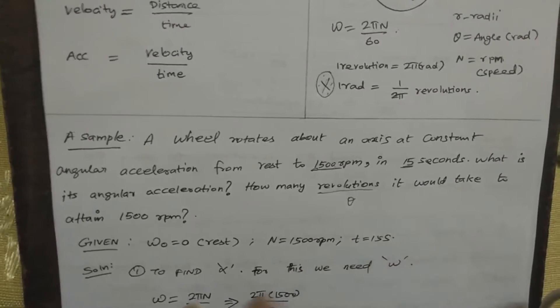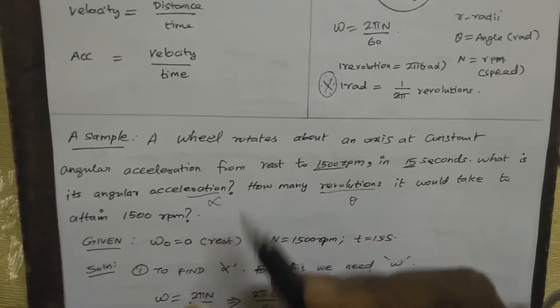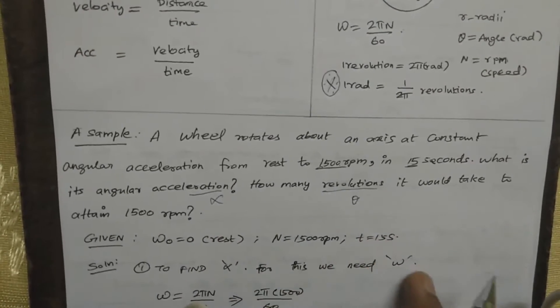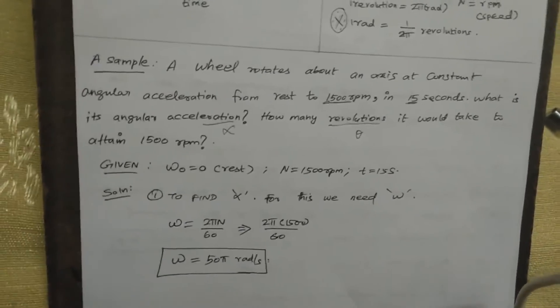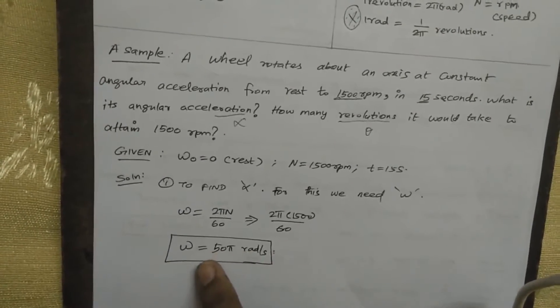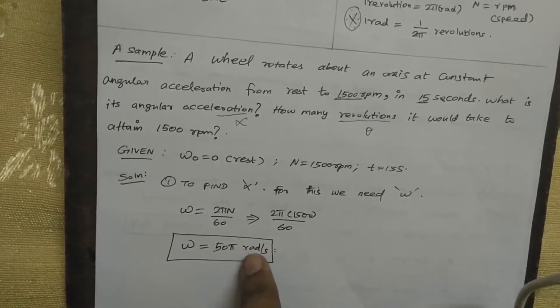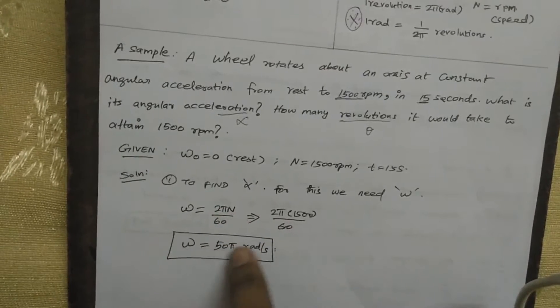To find the value of angular acceleration α, that is equal to ω. For that, ω equals 2πn by 60, 2 into π into 1500 RPM divided by 60. ω equals 50π radians per second.